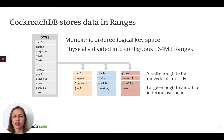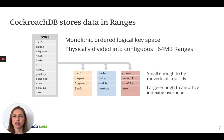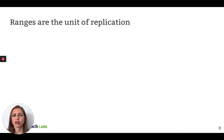Ranges start empty, grow, split when they get too large, and merge with their neighbors when they get too small. Ranges are physically stored on a per-node key-value store. We currently use RocksDB for our storage layer, but we're actually in the process of changing that.